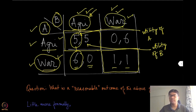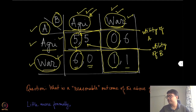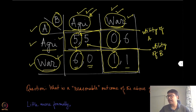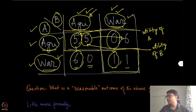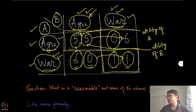Now let's look at the other situation: if player B is choosing war, then if A chooses agriculture it gets nothing — it essentially loses everything. But if it goes for war, at least it can defend itself and save its resources. So again war is a better option. We can conclude that no matter what the other player is choosing, going for war is a better option for this player. By symmetry, the same argument applies to player B.